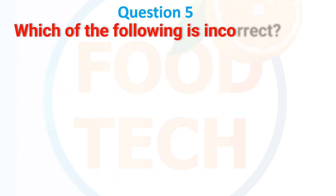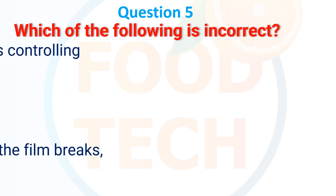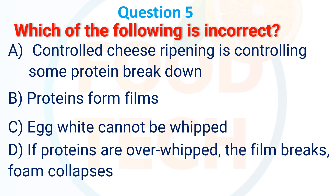A. Controlling cheese ripening is controlling some protein breakdown. B. Protein forms film. C. Egg white cannot be whipped. D. If proteins are over-whipped, the film breaks and collapses. The answer is C: egg white cannot be whipped.